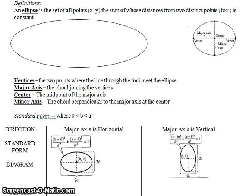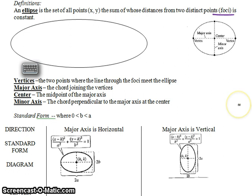Welcome back, class, to the section on ellipses. An ellipse is essentially like an oval — it is related to a circle that's been squashed. It is a set of all points (x, y) the sum of whose distances from two distinct points, called the foci, is constant. You're going to have the foci out here.